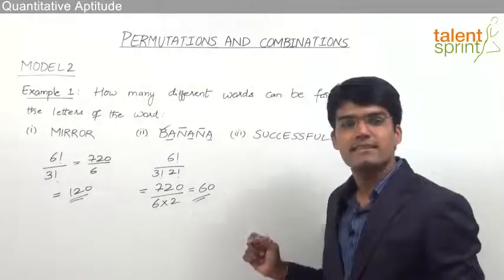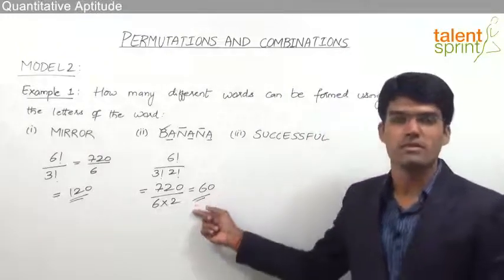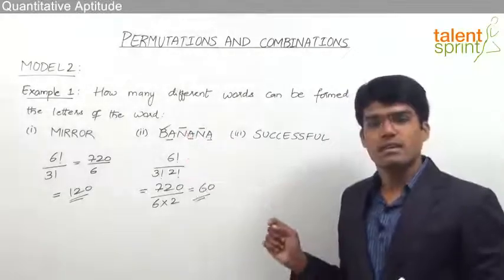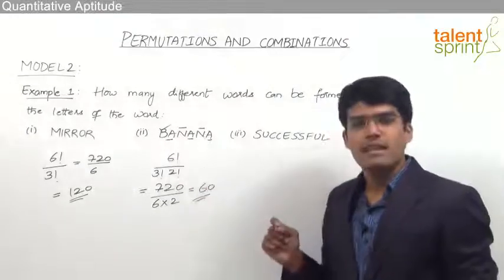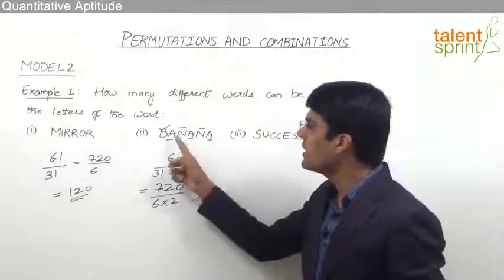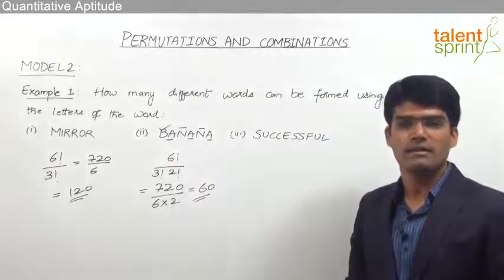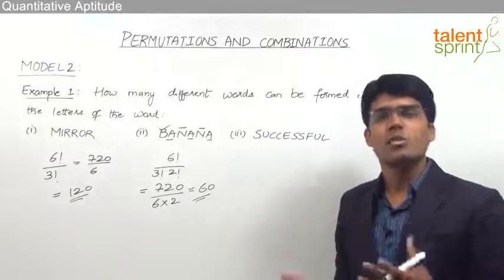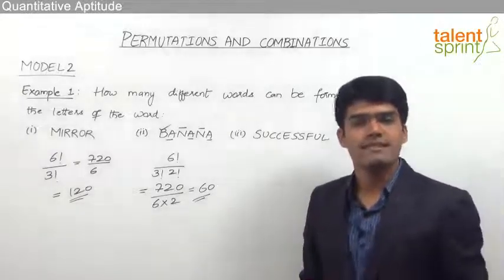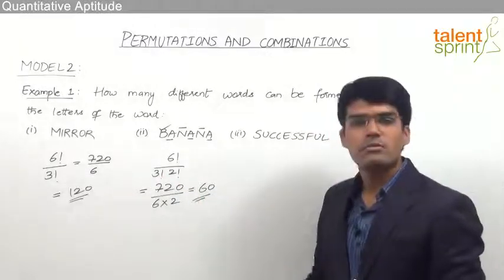Even though there are total six letters, we are able to form only 60 different words, whereas in general with six letters we can form six factorial words. The reason we get fewer words is because of repetitions. When the three A's change their relative positions, the word formed still remains banana. Likewise, when the N's change their positions, the new word still remains banana. So we get many cases where, though the positions of the letters are changed, the word formed remains the same. That is why we divide by those factorials to find the true answer of 60.